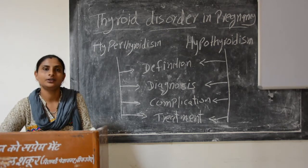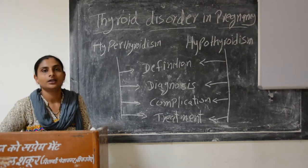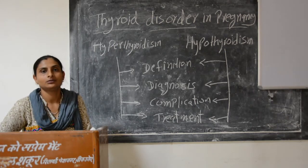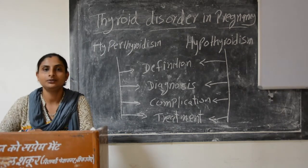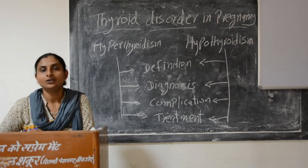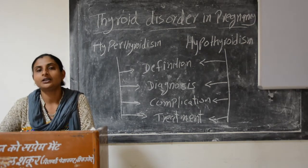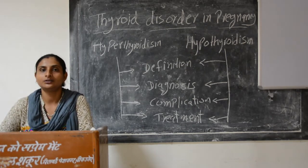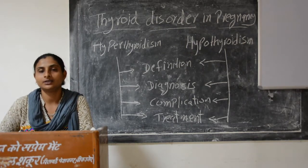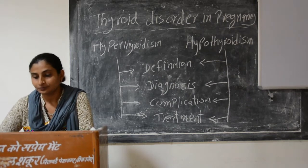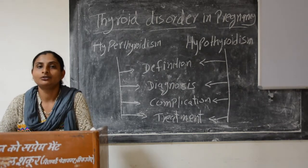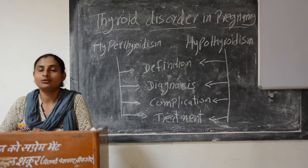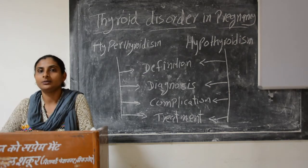If you look at the fetus, in the 10th week the fetus starts to produce thyroid hormones. T3 and T4 can cross the placental barrier.